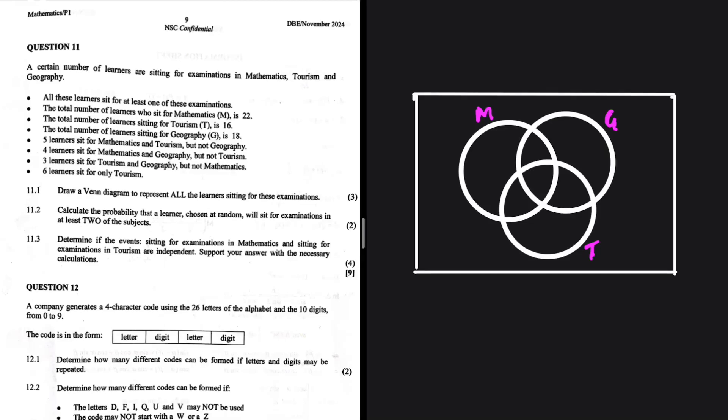I already have the Venn diagram in front of me. A certain number of learners are sitting for examinations in mathematics, tourism, and geography. Question 11.1: draw a Venn diagram to represent all the learners sitting for these exams. The idea with the Venn diagram is that we must start with the numbers in the inner spaces and then move outwards.